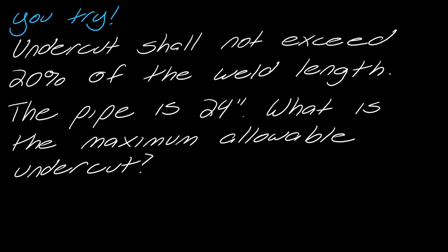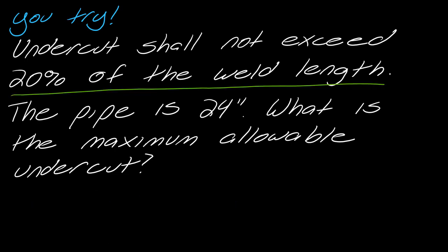Now you try this one. Undercut shall not exceed 20% of the weld length. The pipe is 24 inches. What is the maximum allowable undercut? Make a plan, execute it, and when you're ready to see the solution, hit play.